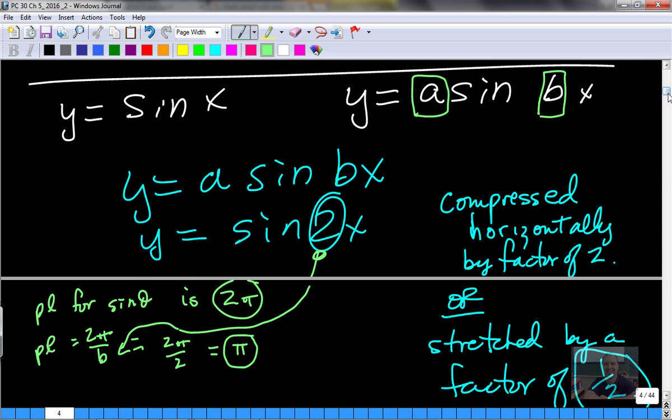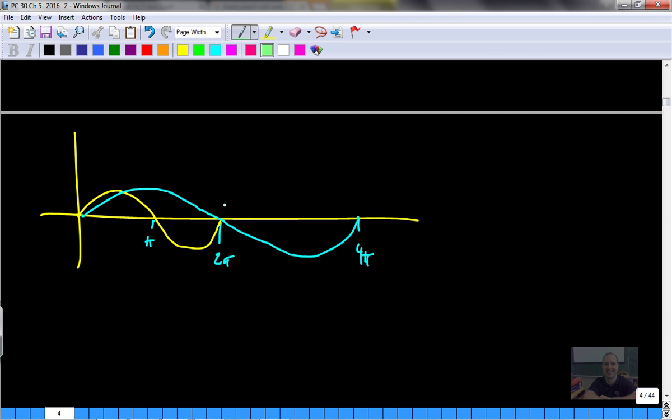If this is a regular sine graph, then if you have a B value of two, it's the same height. The A value doesn't change, it's the same shape, but it's compressed. A B value of two, you could also think there are two cycles where there was once one. There's 2 pi, and this is y equals sine two theta, or two x. There would be two cycles in 2 pi, or each cycle would be half, one over B, half of the original.